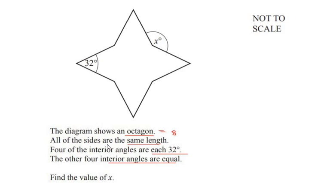All of the sides are the same length, so if length of this side is eight centimeter for example, then rest all these sides will be eight centimeter. Four of the interior angles are each 32 degrees. So here they have shown that this sharp point is having an angle of 32 degrees. So similarly this angle, this angle, and this angle is going to be 32 degrees.